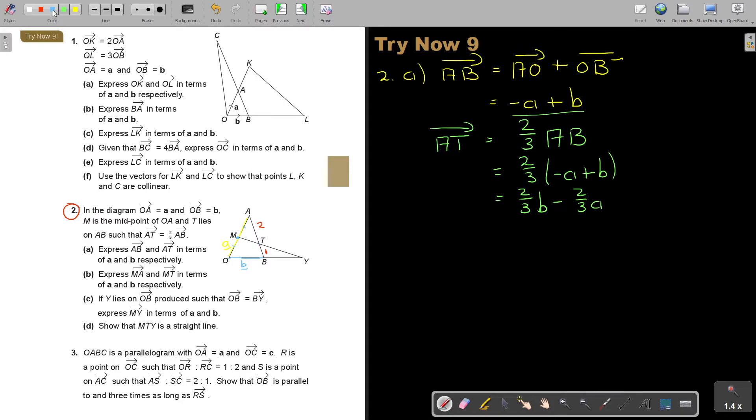Then number B. Express MA and MT in terms of. So let's first start with MA. MA. If you remember, OA was a. So MA is easy. That's just going to be a half a.